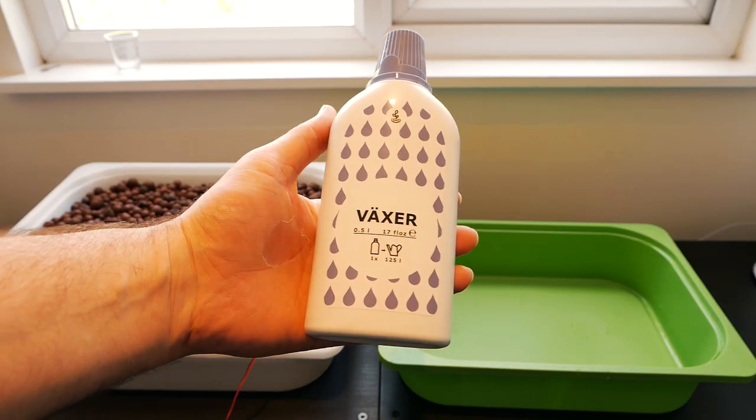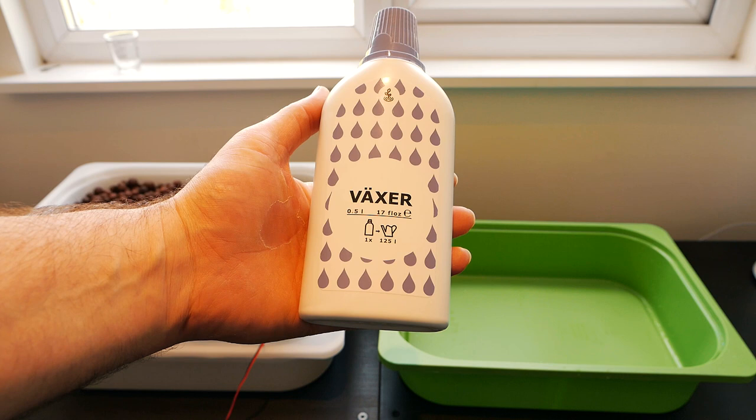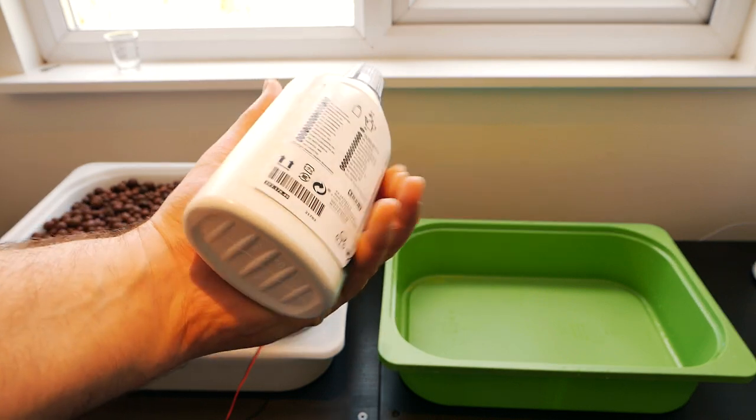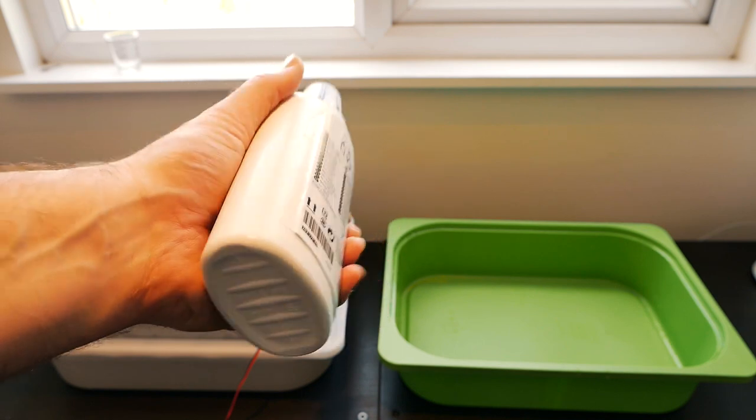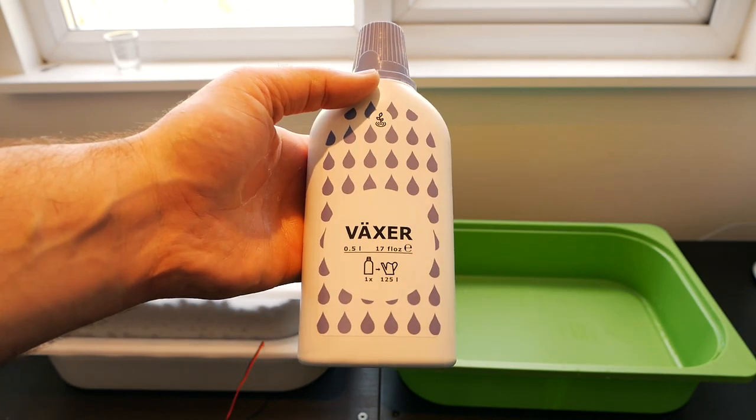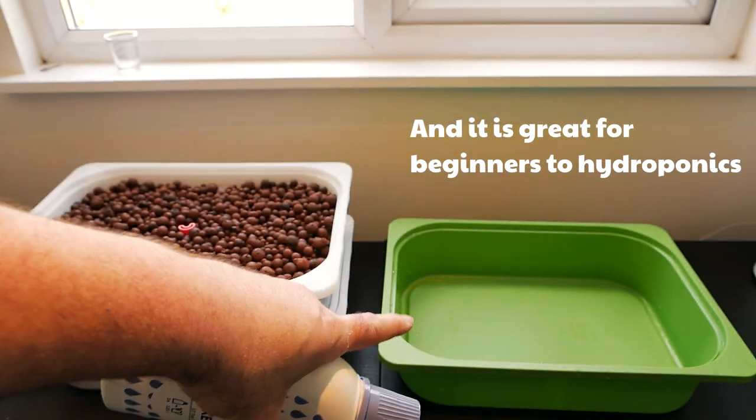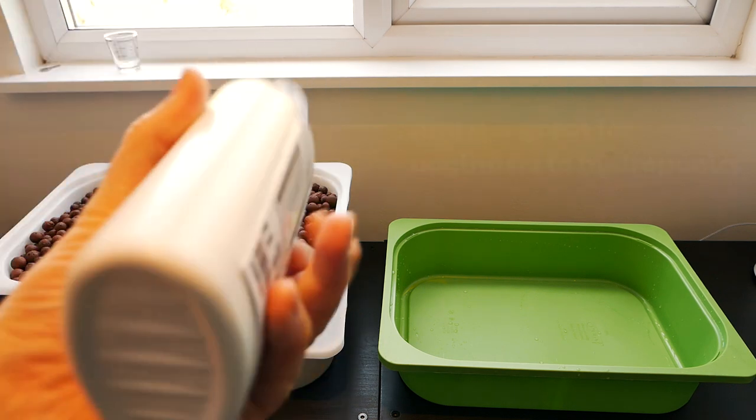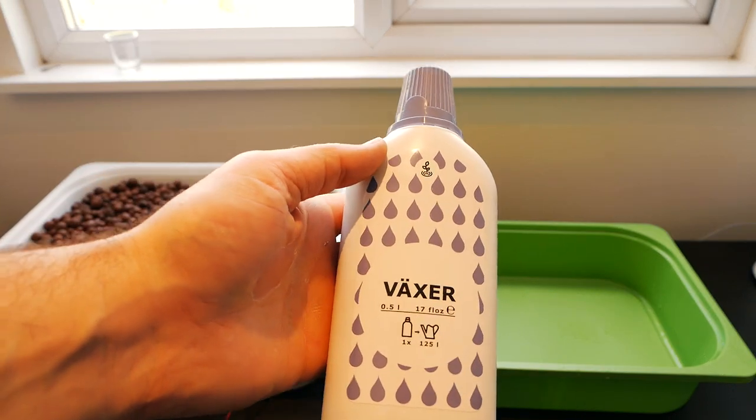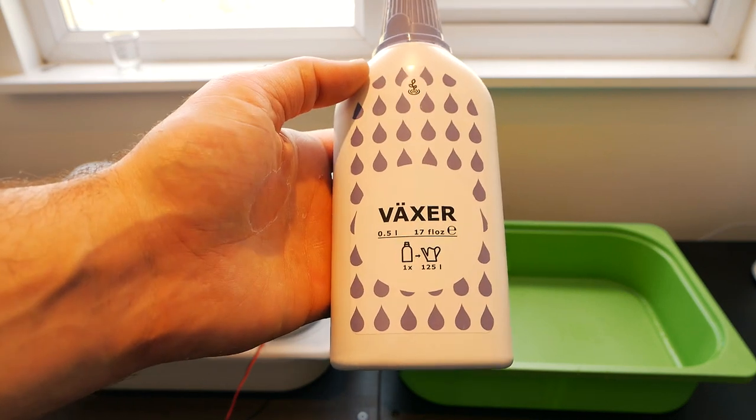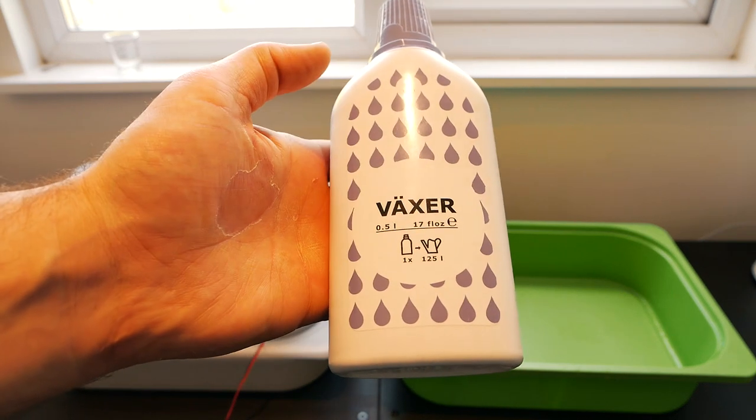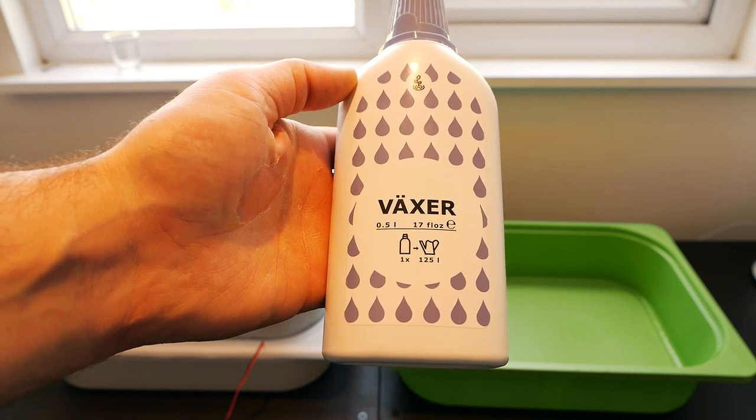I'm going to be using this stuff here from IKEA. It's part of the Vaxxer range. It's an all-in-one nutrient solution, and it's purely because it's accessible. You should be able to get hold of this if obviously you can get hold of these buckets. I'm going to use this in the beginning. I might need to change it to something a bit stronger or something a bit different a bit later on in the season, but I'll keep using this for as long as I can and we'll see how we get on with our plants.